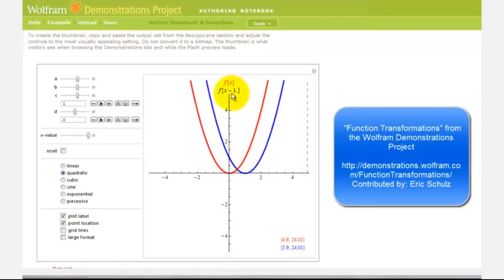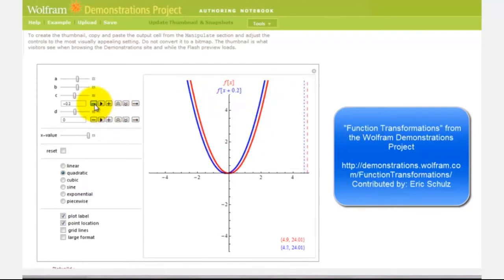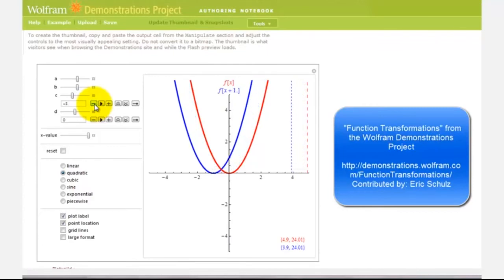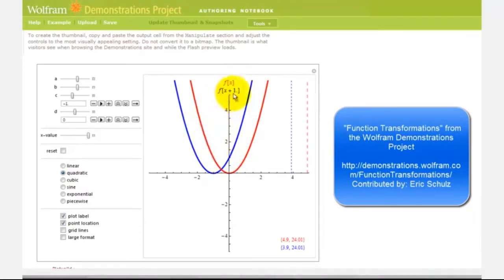And if we add a constant to x, the graph is actually shifted left. Notice how it's going to take smaller values of x to get the same inputs as f of x, and therefore resulting in the same outputs. For the red function, f of zero would be zero. But for the blue function, it would take x equals negative one to get a function value of zero. So if we have f of the quantity x plus a constant, the graph is actually shifted left, assuming c is positive.